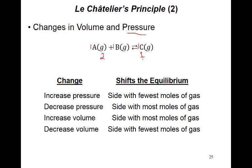The rule is: if you increase the pressure, the system goes toward the side with the fewest moles. So if pressure is increased, the reaction goes forward (toward one mole). If pressure is decreased, the system goes toward the most moles, which is two, so it goes in the reverse direction.